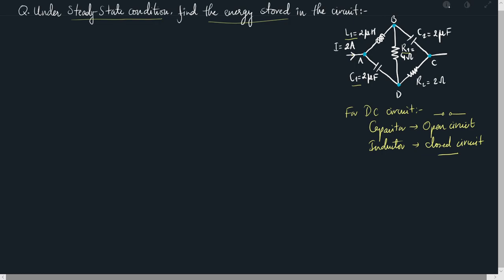The three components are inductor, capacitor, and resistor. Out of these three, only two of them store energy: the inductor and the capacitor. So to find the total energy stored, we need to find the energy stored in inductor L1 and capacitors C1 and C2, and add them. The energy stored in a capacitor is given by half times C times V squared, and the energy stored in an inductor is given by half times L times I squared.